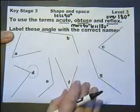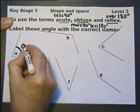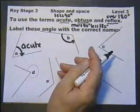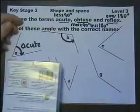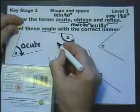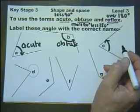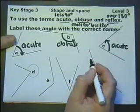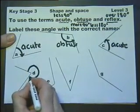So label these angles with the correct name. So this angle here, is under 90, so it's an acute angle. This angle here, well if you get the corner of the video again, and pop it in there, you can see that it's more than 90. But less than 180, so that's obtuse. This one, less than 90. If you can't see that, then use something with a corner. So that's acute. This one, going around here, well that's going past 180. So that's reflex.